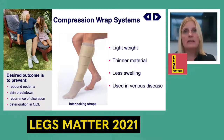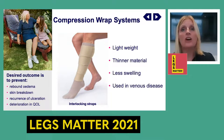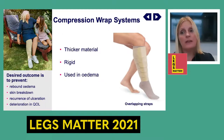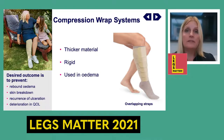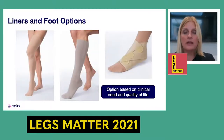Interlocking wraps tend to be lightweight and slightly thinner material, making them suitable for leg-shaped legs without much swelling — often used for venous disease. Overlapping wraps tend to have thicker material and are designed for edema. The slightly thicker, overlapping material gives the wrap a rigidity and stiffness, and it's that resistance to movement that helps squeeze fluid up through the leg and through the lymphatic system.